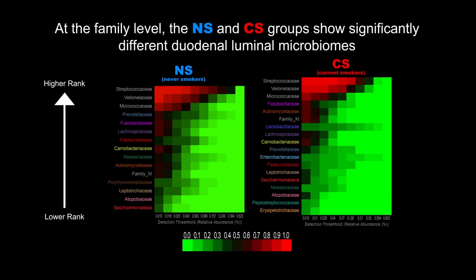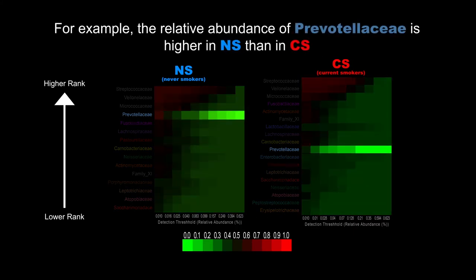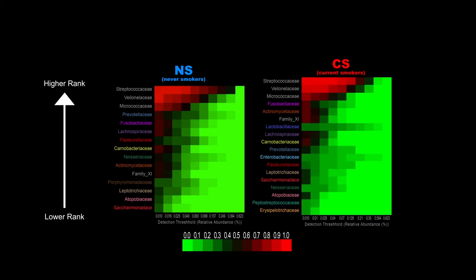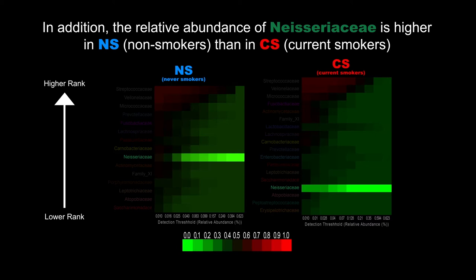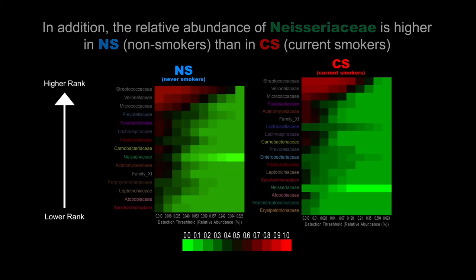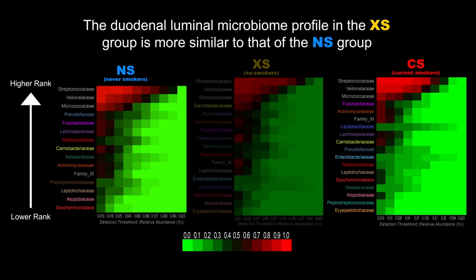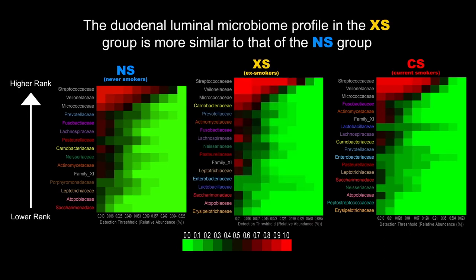At the family level, the NS and CS groups show significantly different duodenal luminal microbiomes. For example, the relative abundance of Prevotellaceae is higher in NS than in CS. In addition, the relative abundance of Neisseriaceae is higher in NS than in CS. The duodenal luminal microbiome profile in the ex-smoker group is more similar to that of the NS group.